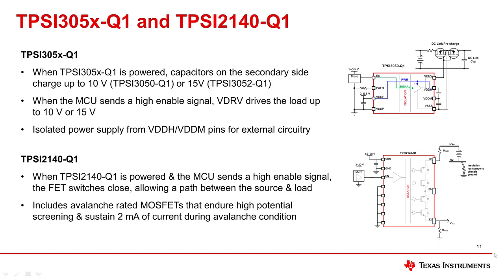When the TPSA2140-Q1 is powered and the MCU sends a high-enabled signal, the FET switches close, forming a path between the source and the load. The MOSFETs embedded in this system are avalanche rated, meaning they can endure high-potential screening and up to 2 milliamps of current during avalanche condition.